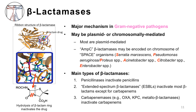SPACE organisms can start as susceptible to beta-lactams but become resistant during beta-lactam therapy. The three main types of beta-lactamases include: number one, penicillinases, which inactivate penicillins; number two, ESBLs — extended-spectrum beta-lactamases — which inactivate most beta-lactams except carbapenems, including penicillinases and cephalosporinases, and are most commonly produced by E. coli and Klebsiella species, making carbapenems the antibiotics of choice; and number three, carbapenemases — gram-negatives producing carbapenemases have recently emerged and spread globally, and treating carbapenem-resistant gram-negative pathogens is extremely challenging as they are often multidrug-resistant.